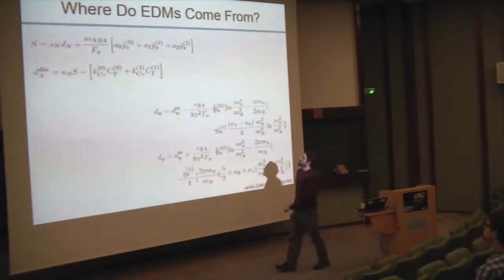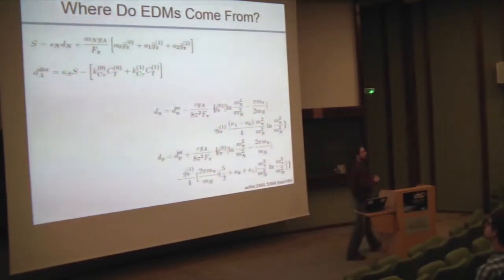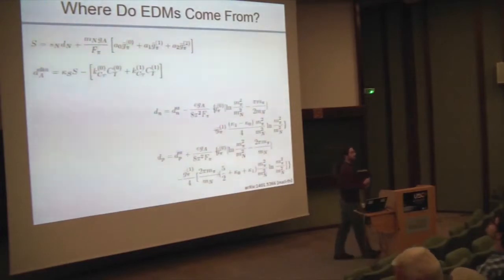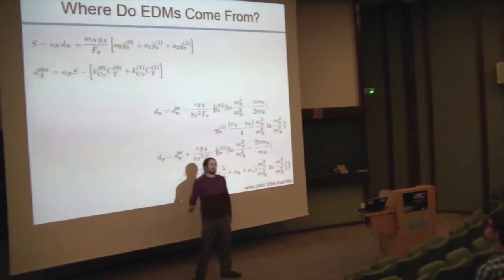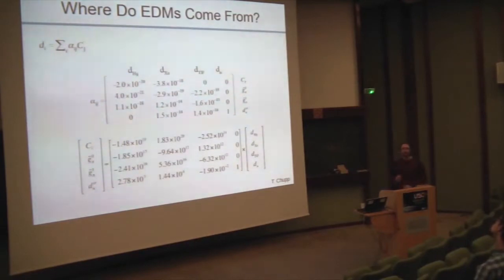The basic message is that nuclear theorists are capable of calculating what most of these coefficients would be in, let's say, a mercury nucleus. When you measure a mercury nuclear EDM, you're getting one number. If you have an idea of what its Schiff moment would be or how sensitive it is to a particular semileptonic coupling, then you can combine it with a measurement in another system that has a different linear dependence and conclude something about the relative strength of these effects.